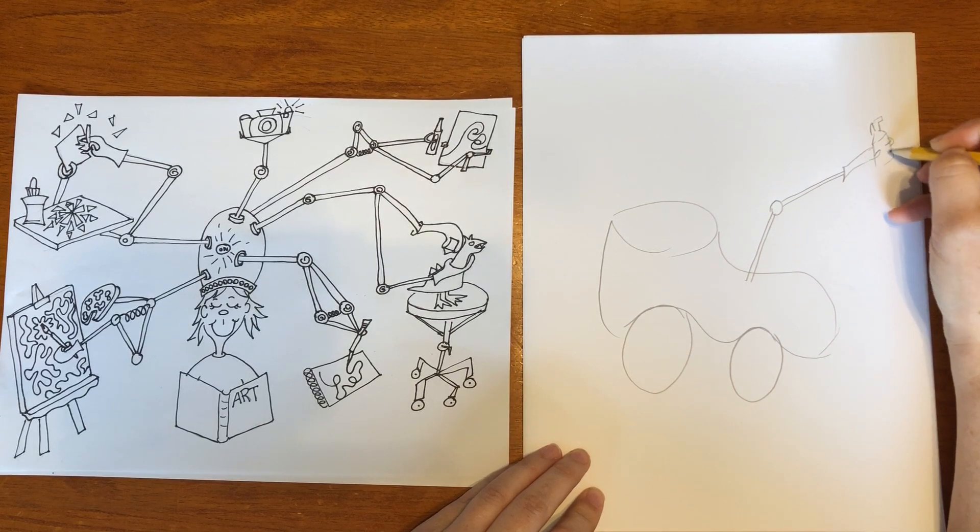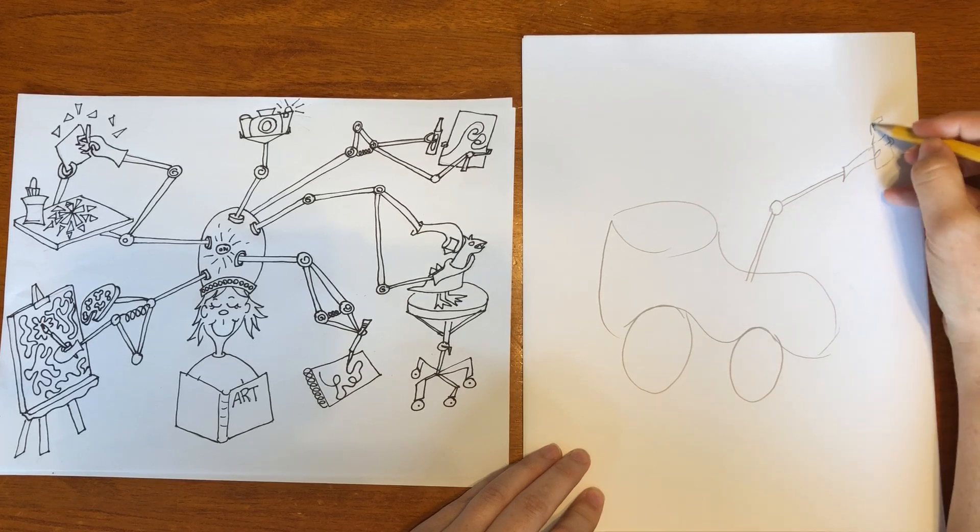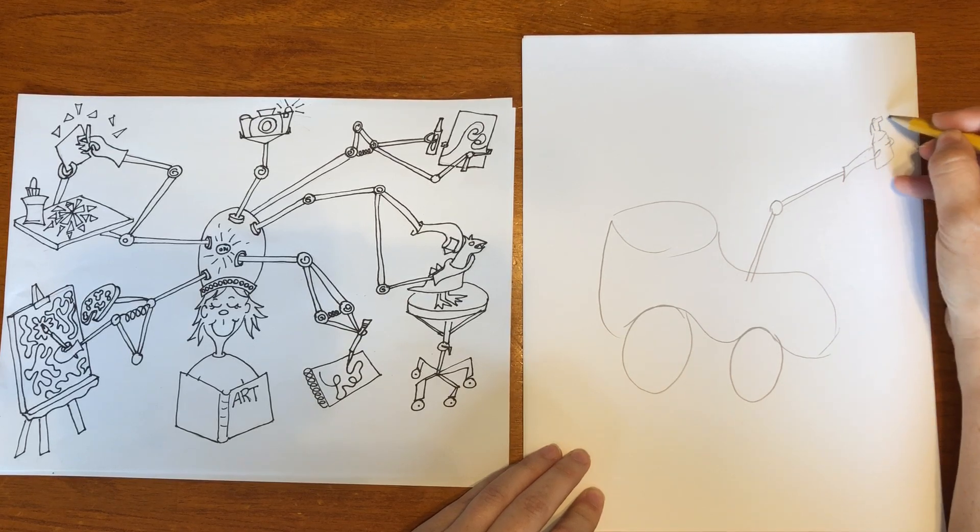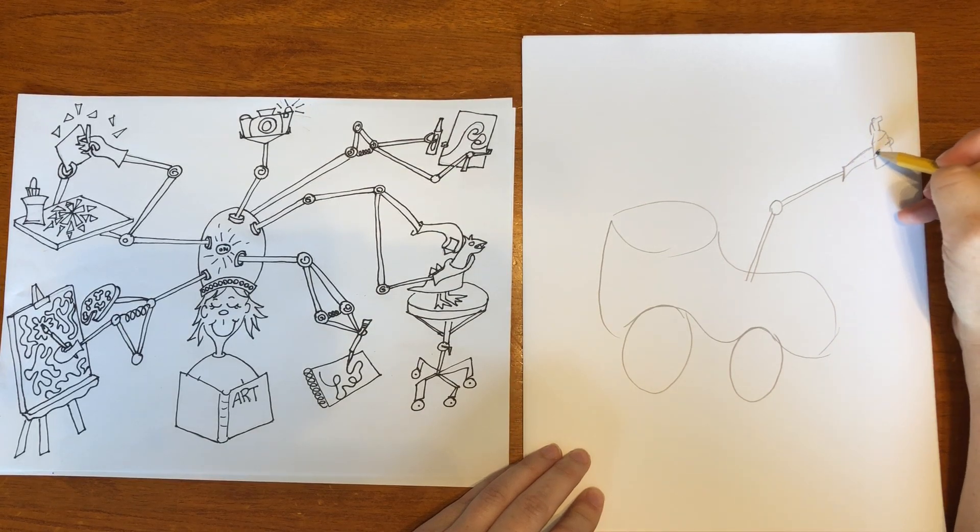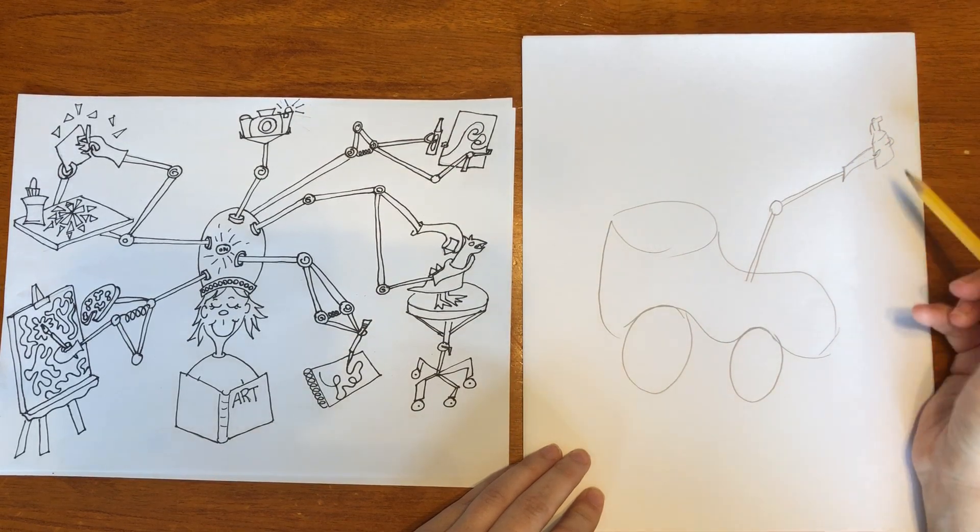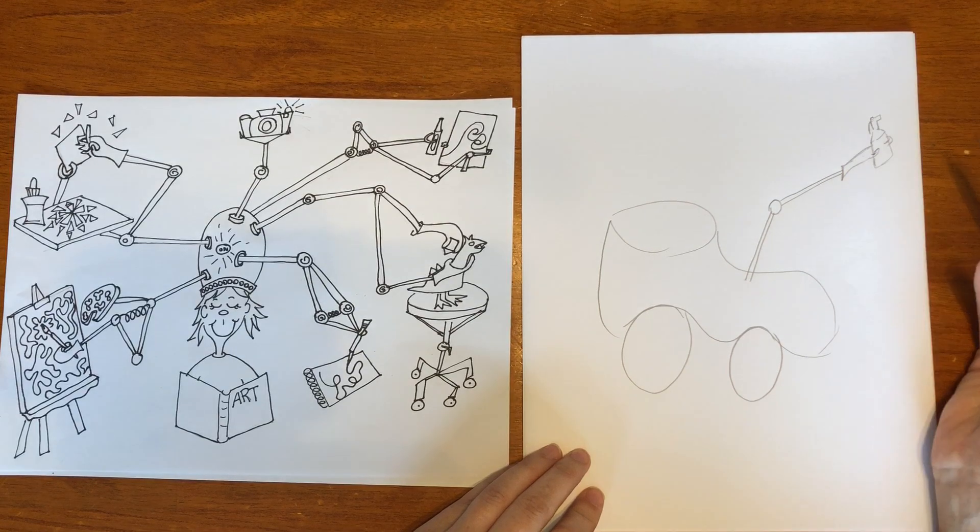And the nice thing is this is a Seuss-inspired thing. So if the spray bottle doesn't really look like a spray bottle it's okay. It's just going to be a little silly like Seuss. So that's good. So you could do something like a glove at the end.